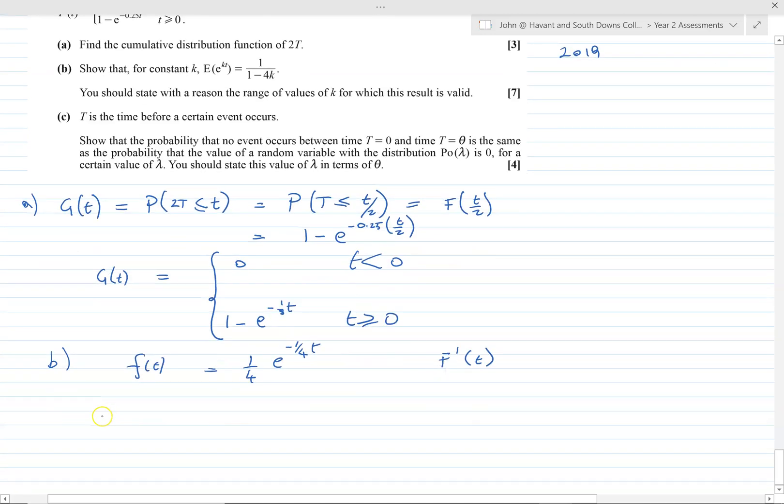To get what we need, if we want the expectation of e to the kt, we need to integrate this times by e to the kt itself. So it's e to the kt, a quarter, e to the minus quarter t, between infinity and naught.